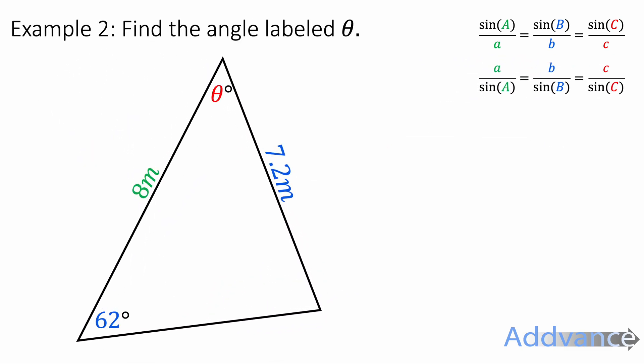Now I've got another example. We're trying to find the angle labelled theta. What we're going to do for this one is find the angle opposite the 8 metres first. After that we'll subtract 62 and that angle from 180 to find the missing angle.